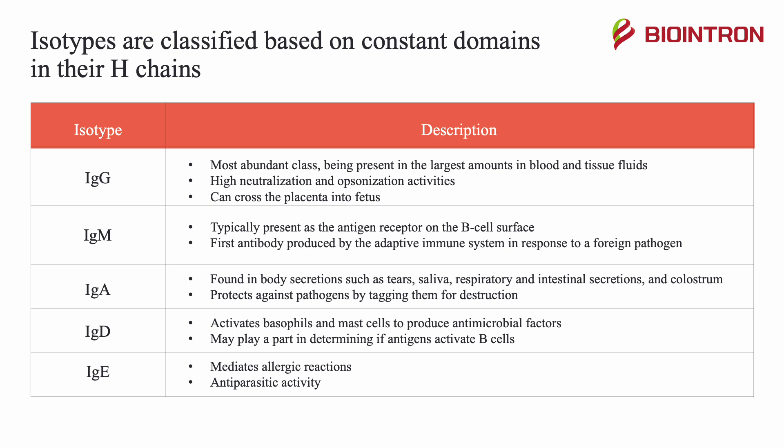IgG is the most abundant class, being present in the largest amounts in blood and tissue fluids. They have high neutralization and opsonization activities, and can cross the placenta into the fetus. IgM is typically present as the antigen receptor on the B-cell surface. It is the first antibody produced by an adaptive immune system in response to a foreign pathogen.